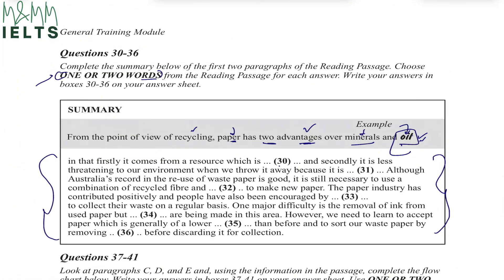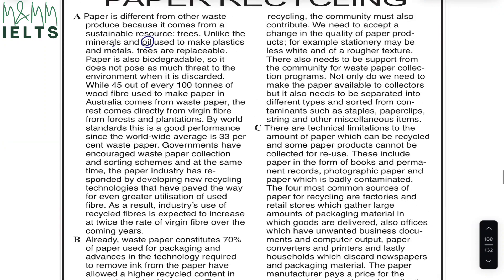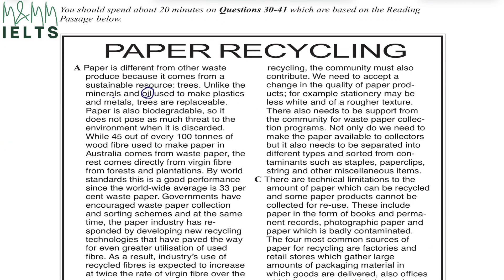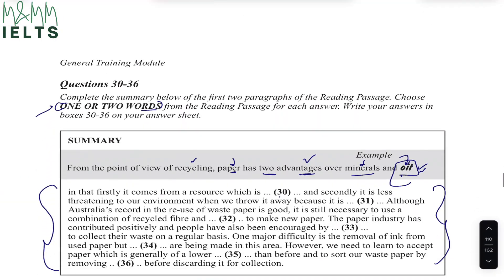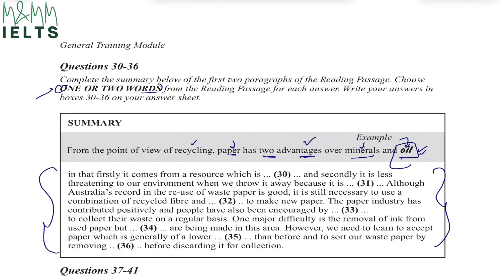Question number 30 says: firstly, it comes from a resource which is dash. All the answers are going to be in sequence. Starting from the very first sentence: paper is different from other waste produced because it comes from a sustainable resource. So the answer is right in the first line. The summary says 'a resource which is sustainable' — and the paragraph says 'sustainable resource.' It's the same thing, just rearranged. The answer for number 30 is 'sustainable.'